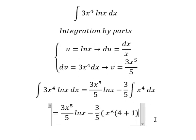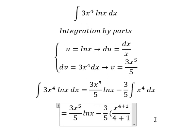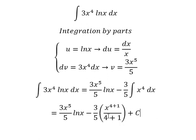Next, the integration of this gives us x to the power of 4 plus 1 over 4 plus 1, which is x to the power of 5 over 5, and I will add the constant C.